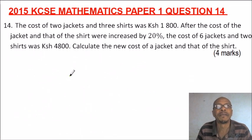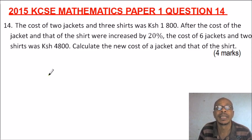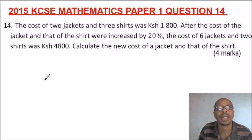This is question number 14, 2015, KCSE Mathematics Paper 1. We are told that the cost of two jackets and three shirts was 1,800 Kenyan shillings. After the cost of the jacket and that of a shirt were increased by 20%, the cost of six jackets and two shirts was 4,800 Kenyan shillings. We need to calculate the new cost of a jacket and that of a shirt.